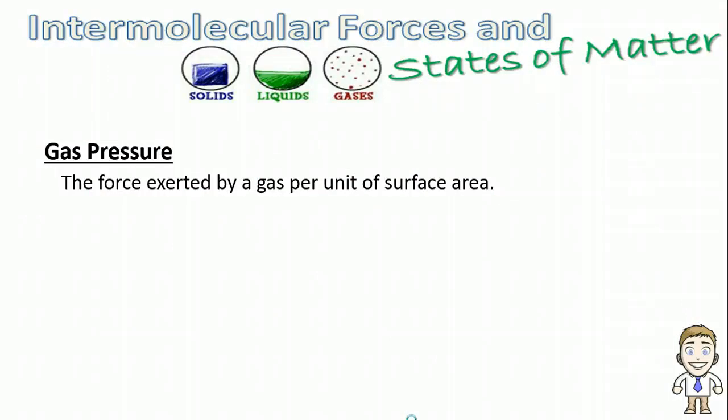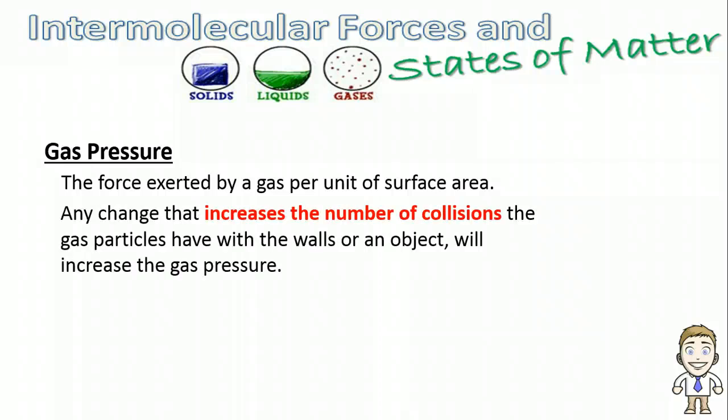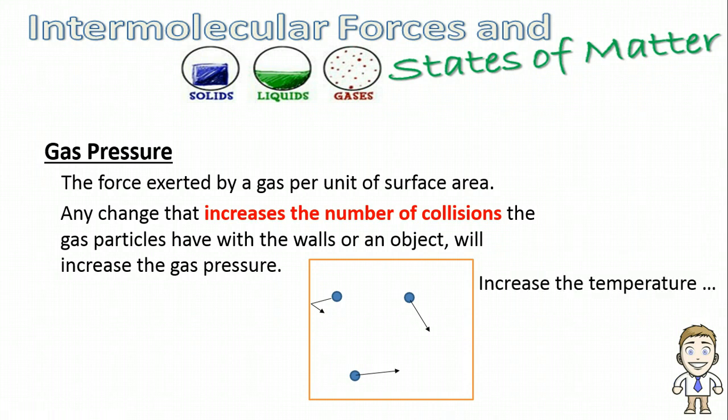Finally, once you understand what causes gas pressure - those collisions of the particles with the inside walls of a container - you can start to talk about how to change it, how you can affect that gas pressure. The rule of thumb is any change that increases the number of collisions the gas particles have with the walls or an object is going to increase that gas pressure. More collisions, more pressure. To understand this, I have an imaginary container full of these three gas particles. Notice the arrows coming off of them represent the fact that they are moving continually.